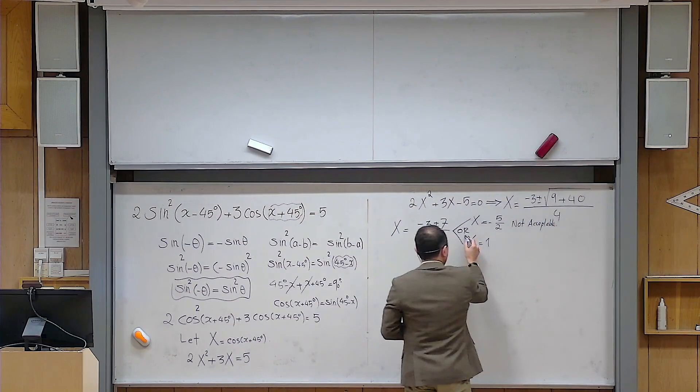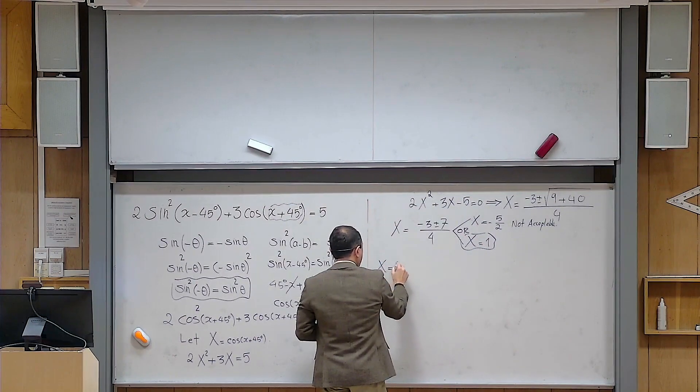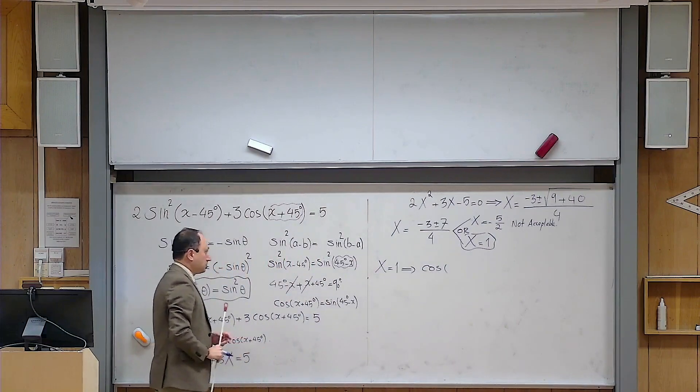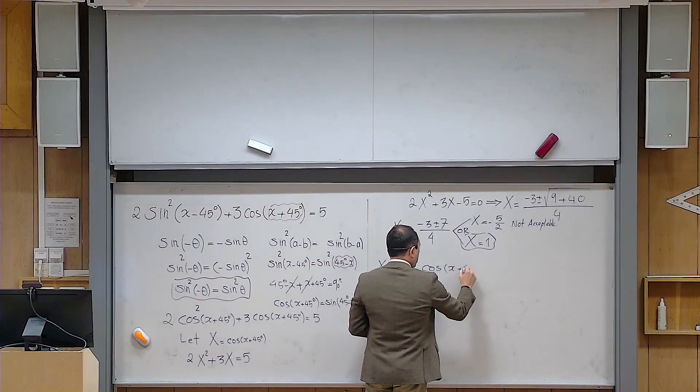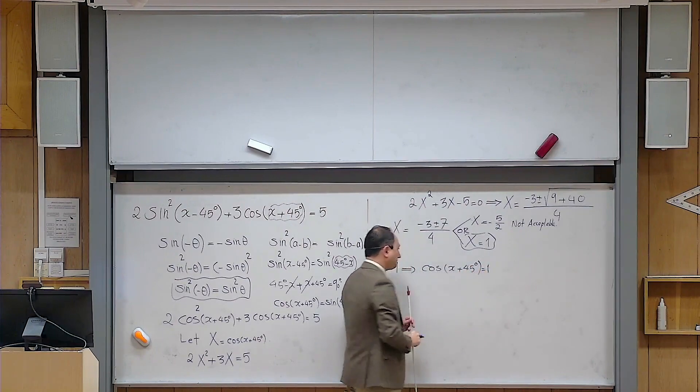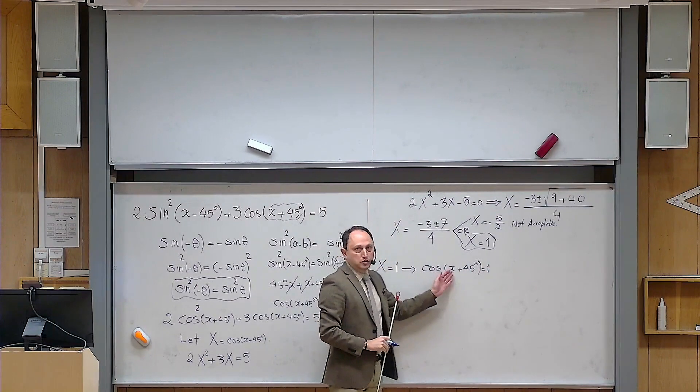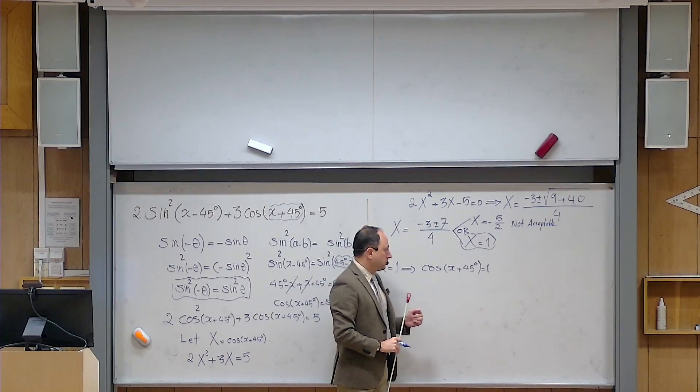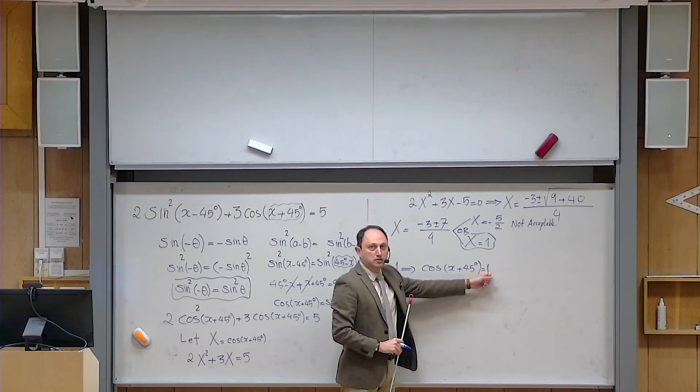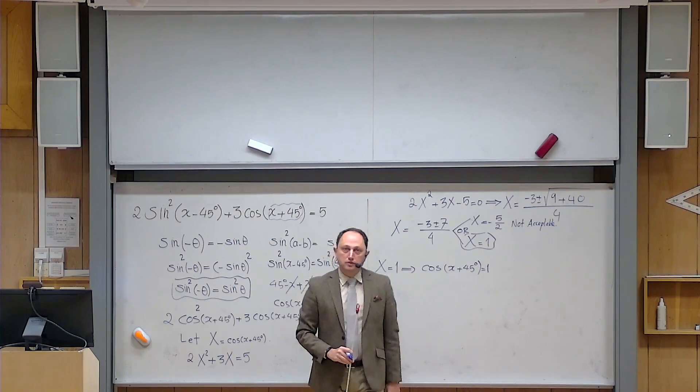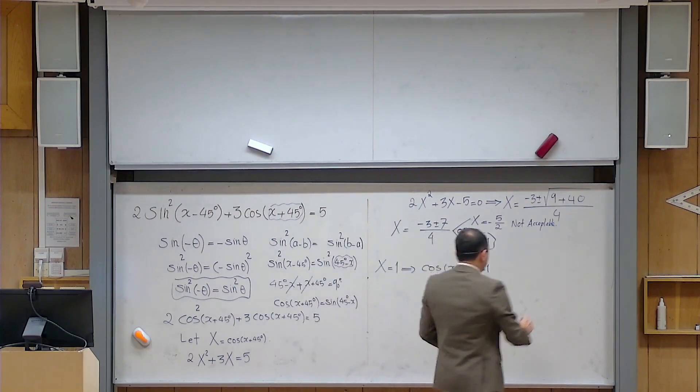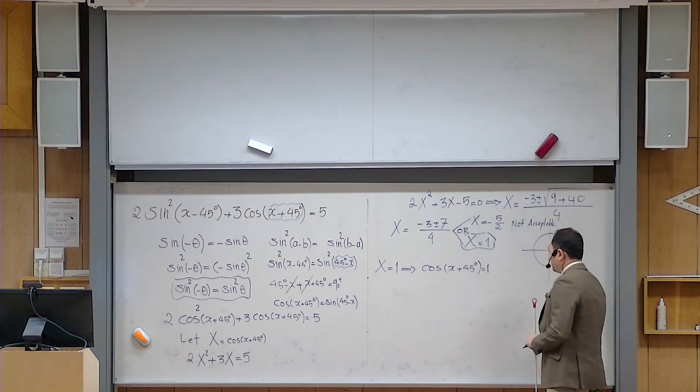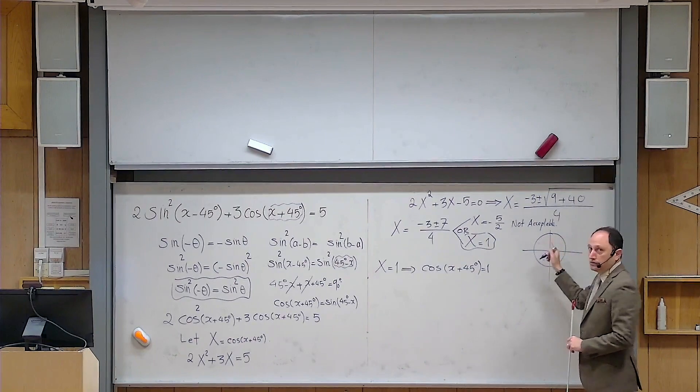And then I have only this situation. But when capital X equals 1, it means that because capital X is the name of this guy, so cosine of x plus 45 degrees equals 1. Of course, you can use the formulas that you have learned in math 4 for solving trigonometric equations. But I think when the numbers on the right are 0, 1, and minus 1, it is always better to visualize it on the unit circle. You know that cosine of an angle is related to the x-coordinate of the point corresponding to the angle on the unit circle.